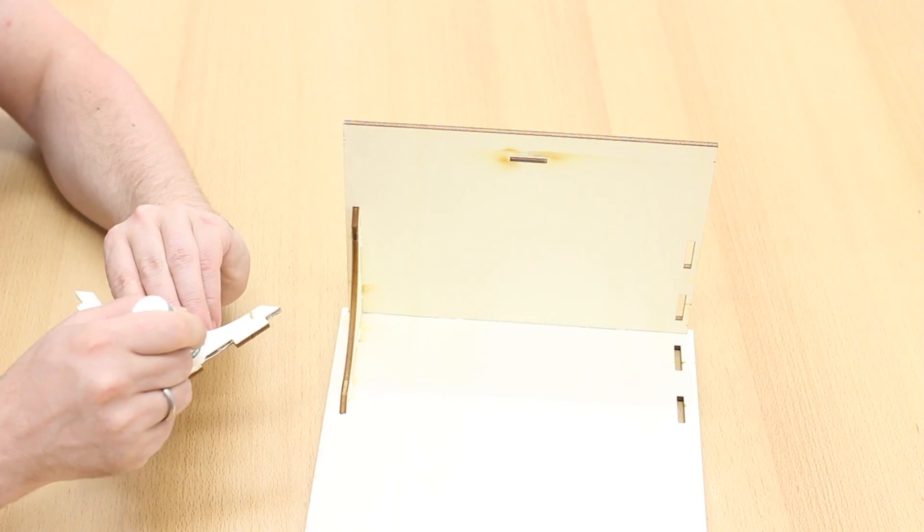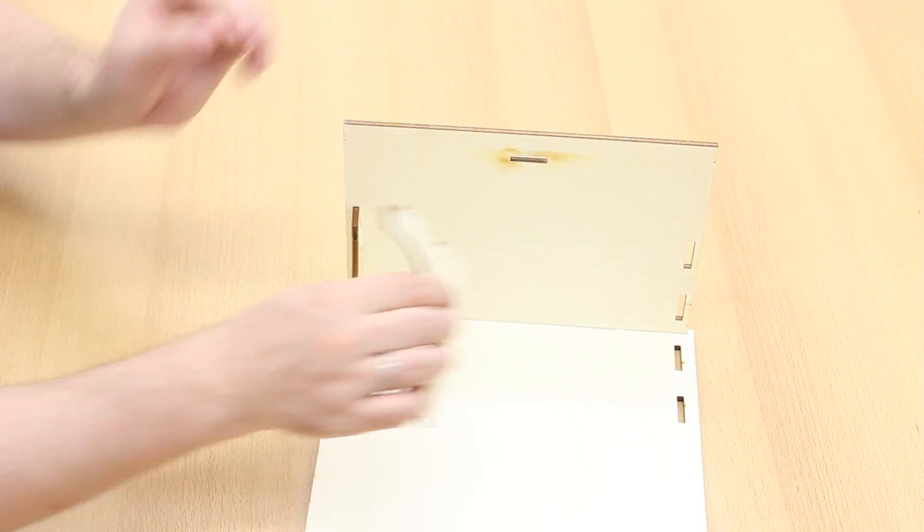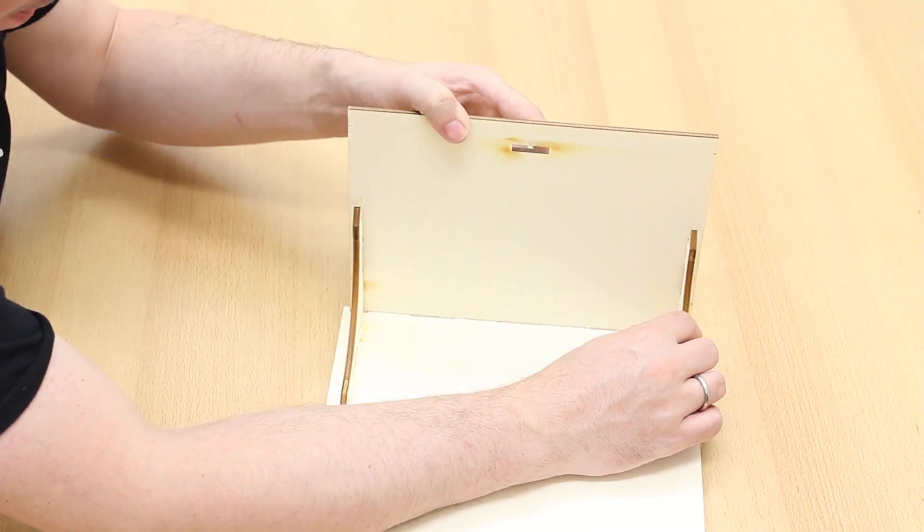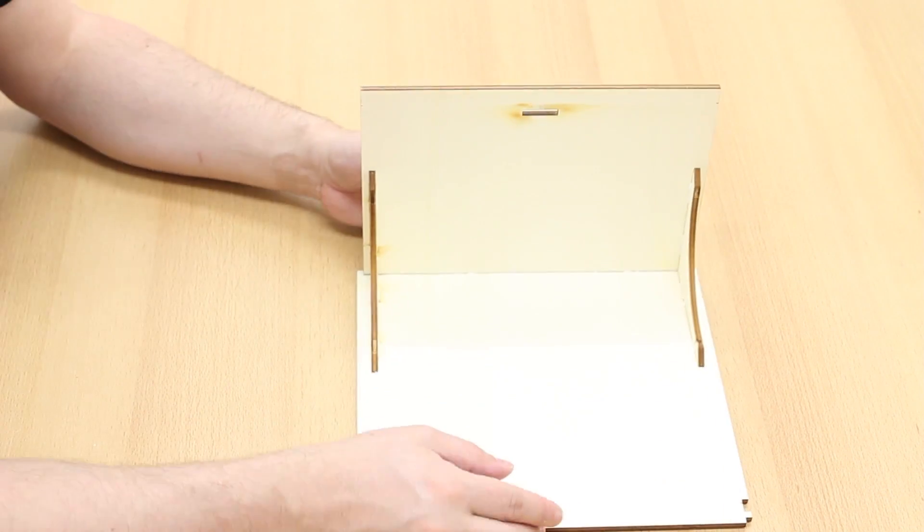Apply glue to the right piece. And again bend the lid a little bit. And it is mounted.